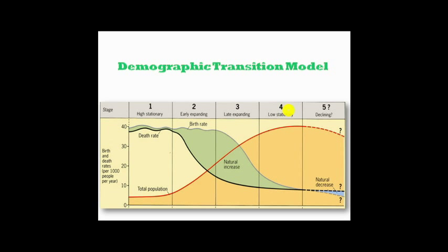Stage Four is the Low Stationary stage. Here, both the birth rate and the death rate are low and almost equal. Hence, the natural increase is very low and the population size remains relatively constant. Austria recorded zero population growth between 1980 and 1985. Most industrialized nations like Japan, Britain, and Sweden are in this phase. The main reasons include: adoption of family planning practices, safe motherhood and child survival practices, improving status of women, late marriages, longer life expectancies, and good healthcare with a reliable food supply.